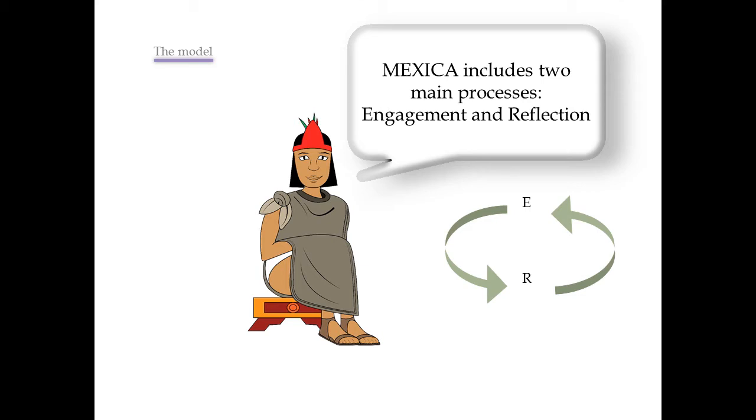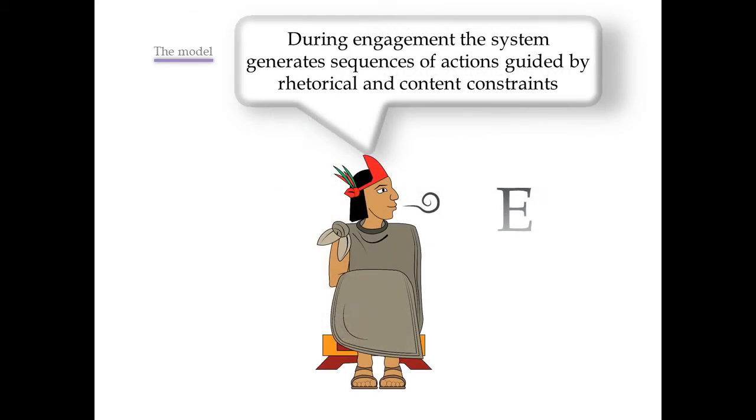You can find engagement and reflection. During engagement, the system generates sequences of actions guided by rhetorical and content constraints. The typical example of engagement is daydreaming - ideas just come and come and we don't have any control about them.